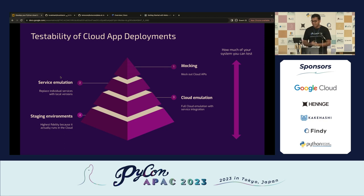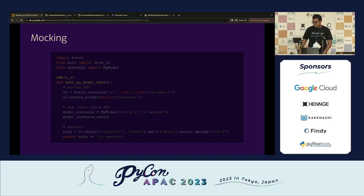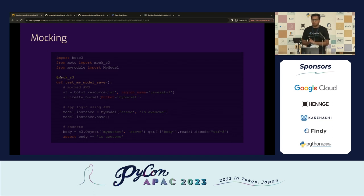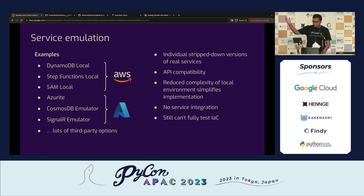Finally, there's the staging environment — push your application, everything runs, everyone's happy. With mocking, you create an S3 bucket and assert logic, but you can't really inspect what's inside that bucket. For service emulation, AWS provides DynamoDB Local, Lambda Local, SAM Local, and Azure has its own emulators — but there are API compatibility issues, you can't test infrastructure as code like CDK or Terraform, and these are stripped-down versions that don't behave like real cloud services.